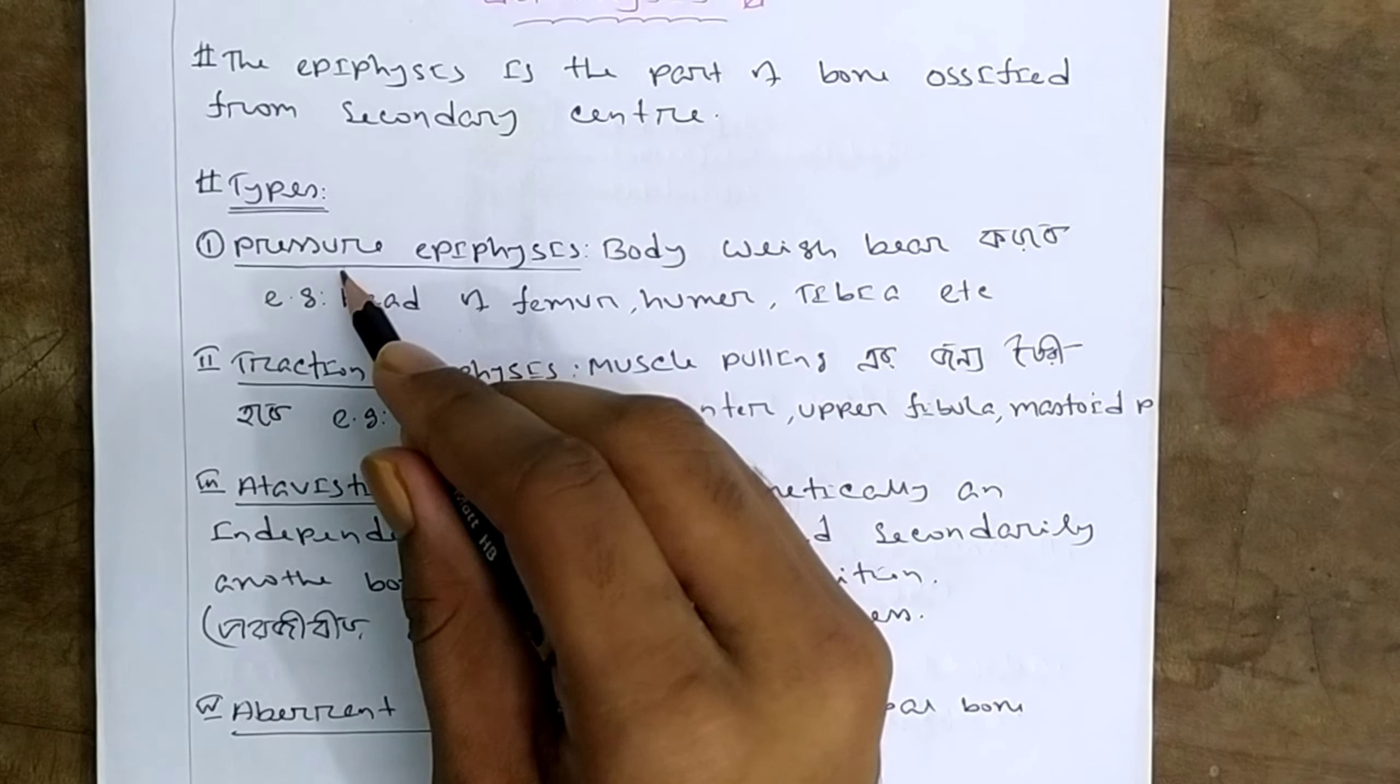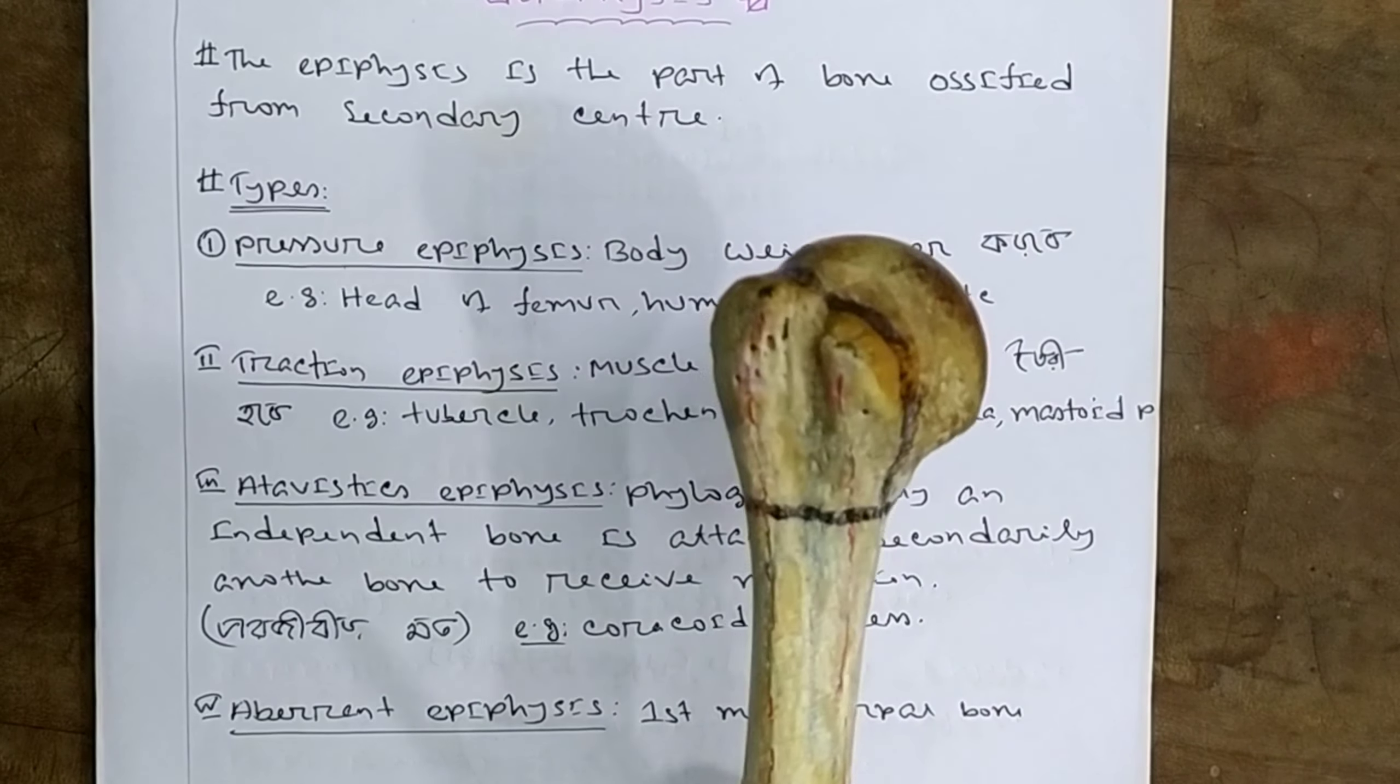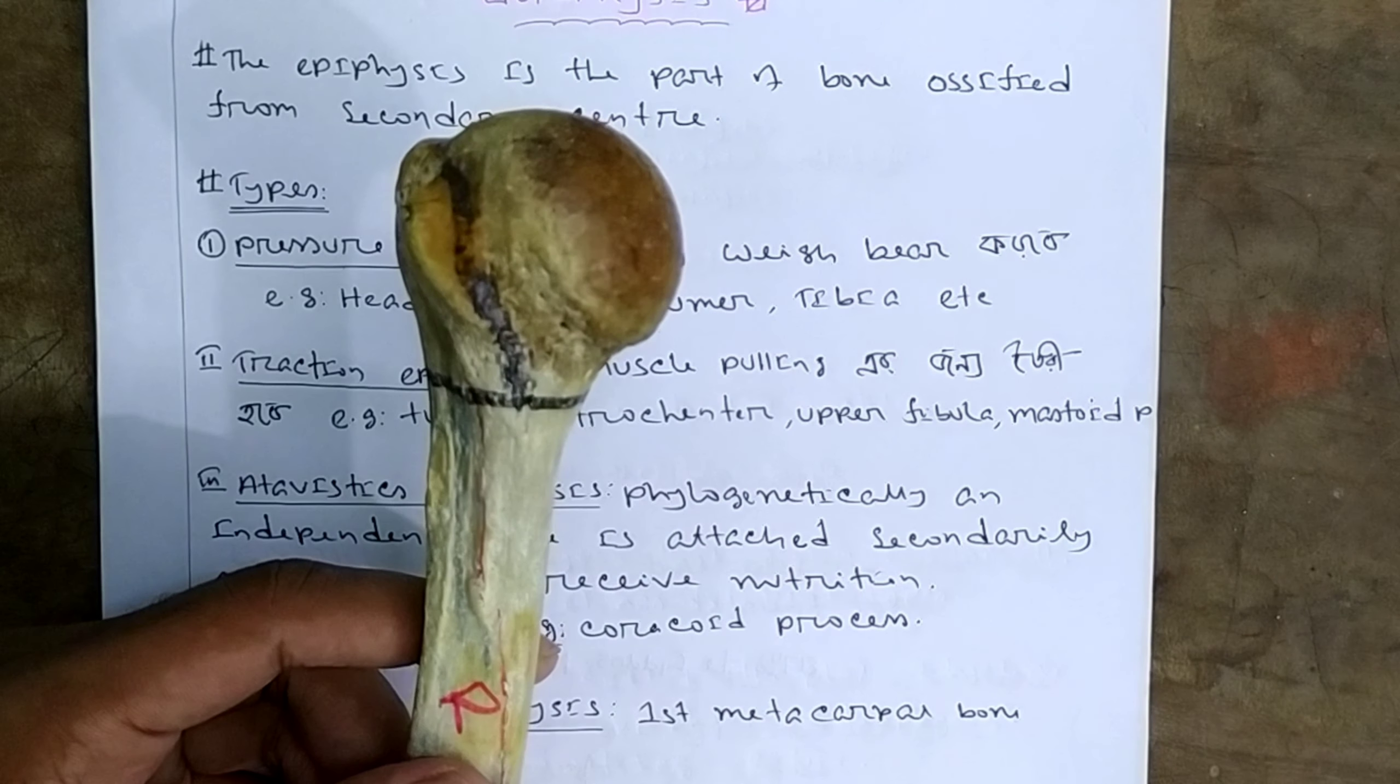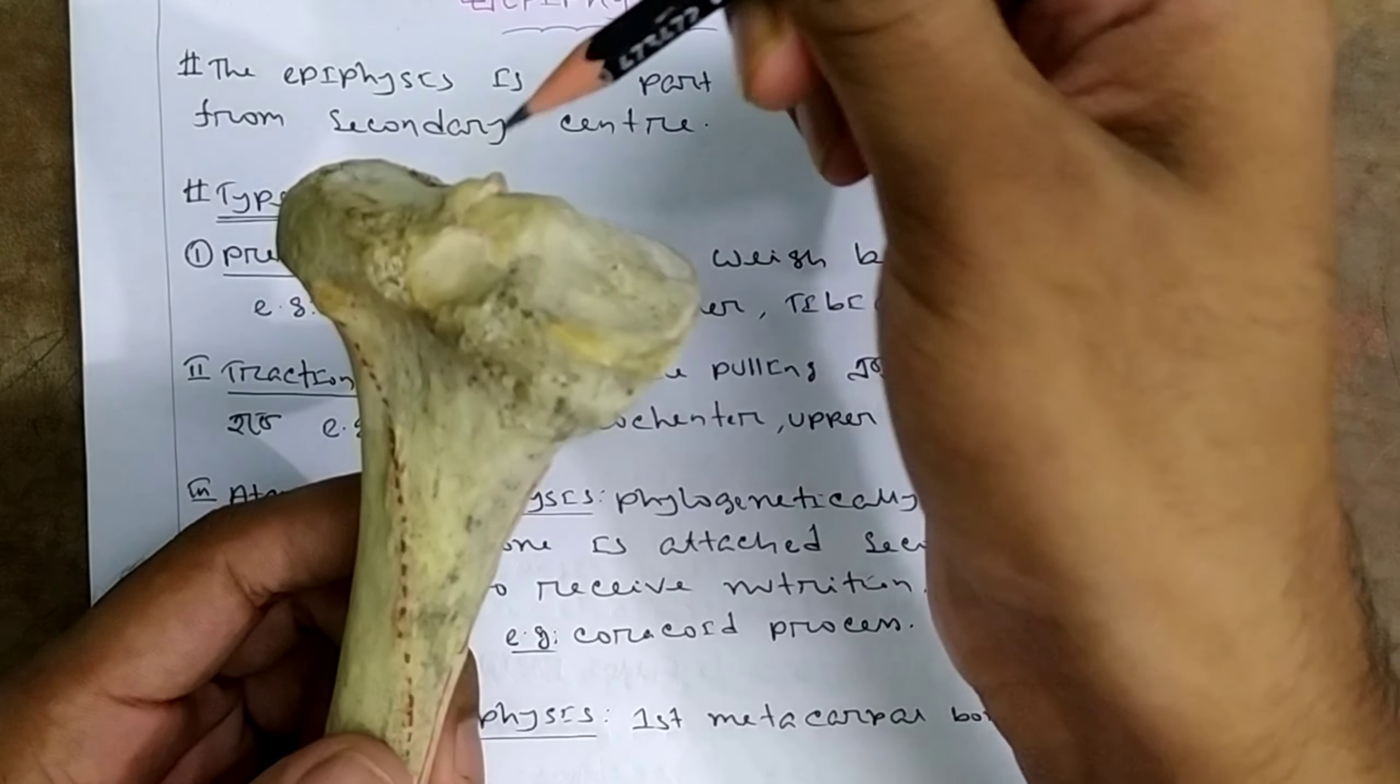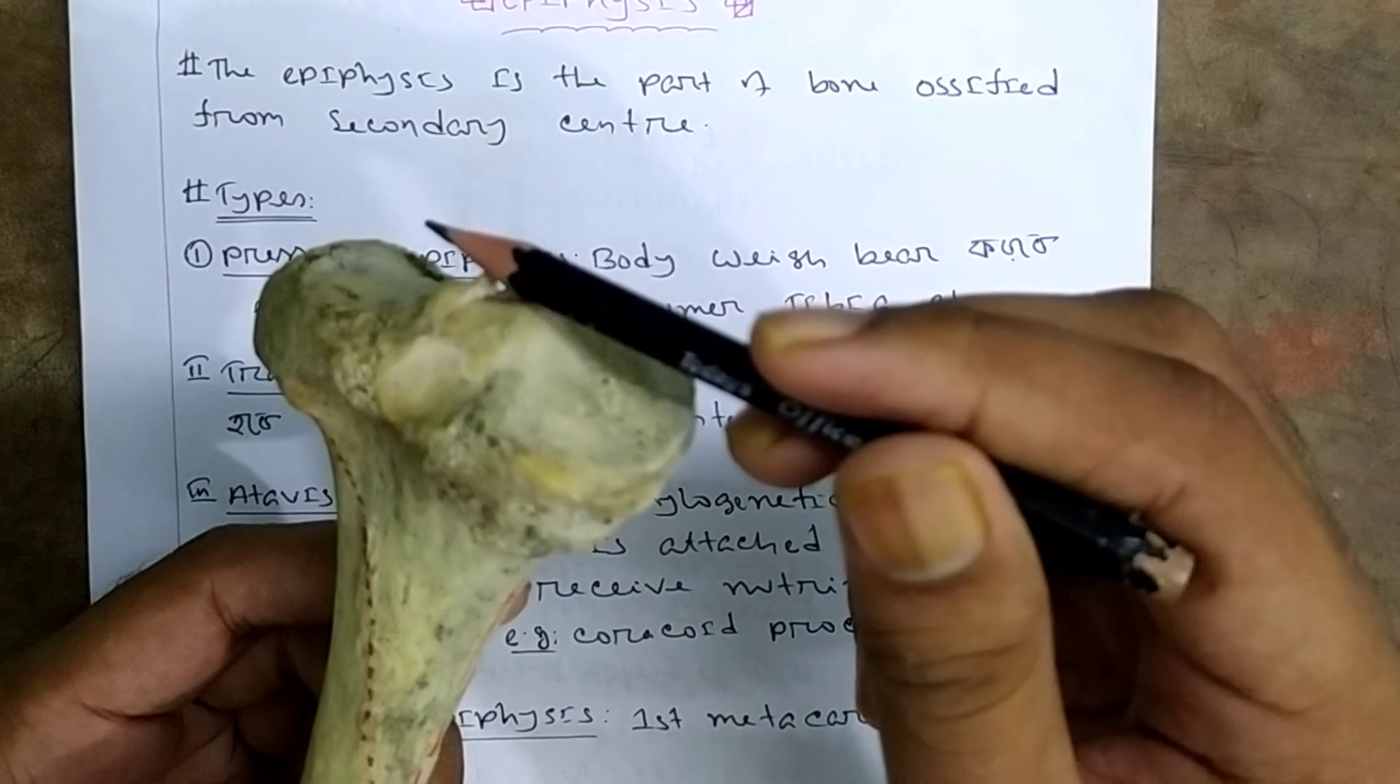Pressure epiphysis bears the body weight. Pressure epiphysis includes the head of the femur, humerus, tibia, etc. The humerus head bears body weight. The femur head bears body weight. The tibia is also a pressure epiphysis bearing body weight.